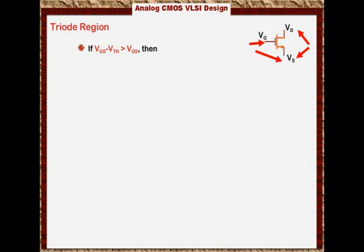I want you to visualize that. VGS tells you how strong the channel is. That voltage is bigger than VDS, that means VDS is too small. VDS is smaller than VGS minus VT. Visualize that on the transistor. If this is the case, then you are in the triode region, the linear region.